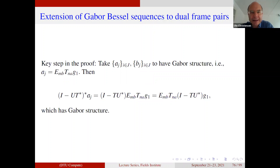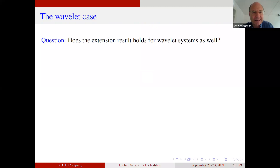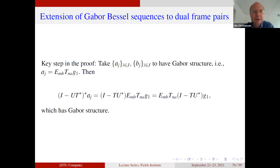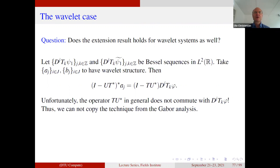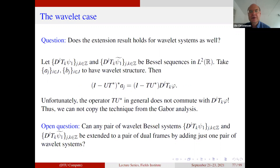For the wavelet system we do exactly the same thing: we look at the operator (I minus U T-star)-adjoint but now acting on a wavelet system. If you do that, you bump into exactly the same problem — this operator does not commute with translation in the wavelet system. So from the general theorem you can extend your system to a tight frame, but you don't get that you are extending it with a system having wavelet structure. This leads to an open problem: given any pair of wavelet Bessel sequences, can they be extended to a pair of dual frames by adding one more wavelet system to each of them? I don't know the answer.